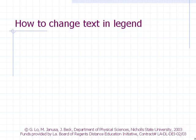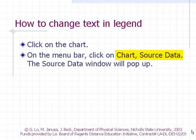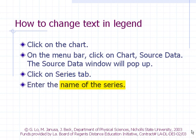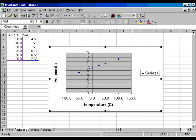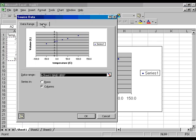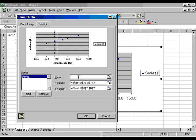How to change the text in the legend: Click on the chart. On the menu bar, click Chart and then Source Data. The Source Data window will pop up. Click on the Series tab and enter the name of the series in the appropriate blank. Click OK when you are finished.